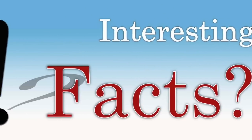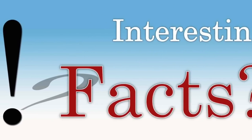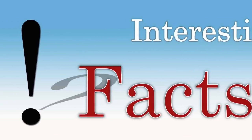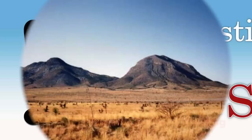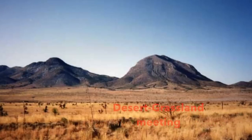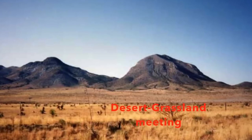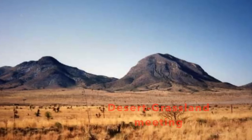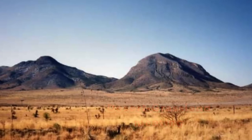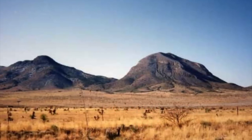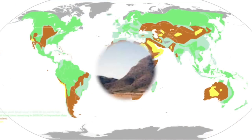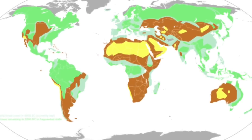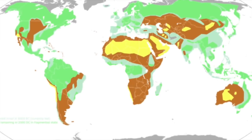Finally, let's learn some interesting grassland facts. Grassland biomes are normally situated between a forest and a desert. In fact, grasslands surround every single desert in Asia. Also, there is a grassland biome on each continent, with the exception of Antarctica.